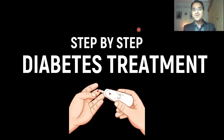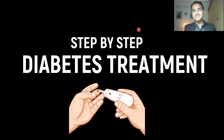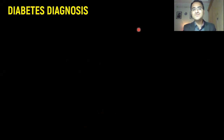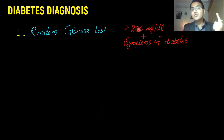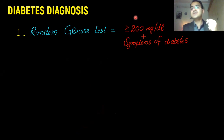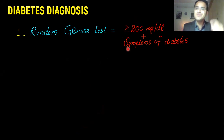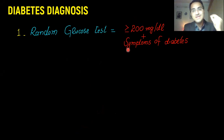Today we are going to talk about step-by-step management and treatment of diabetes. For the diagnosis of diabetes you need to do a few tests. A random blood glucose test, if greater than or equal to 200 milligram per deciliter in the presence of symptoms of diabetes — symptoms like polyuria and polydipsia — the patient will be labeled as a diabetic patient.